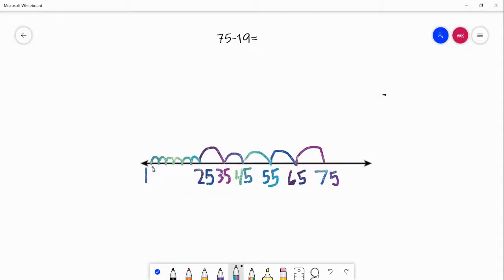So there we go, we landed on 19. Now I'm going to count up all of these jumps that I made. So we have 10, 10, 10, 10, 10.